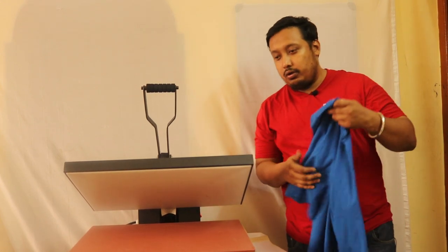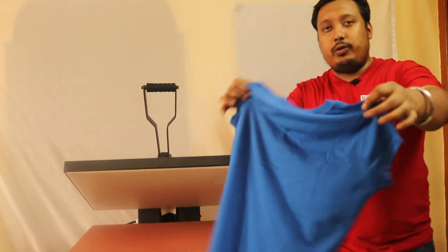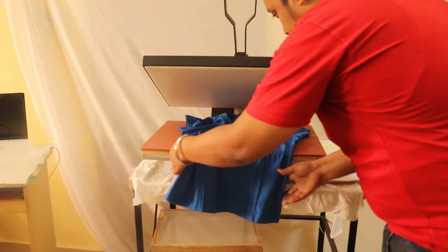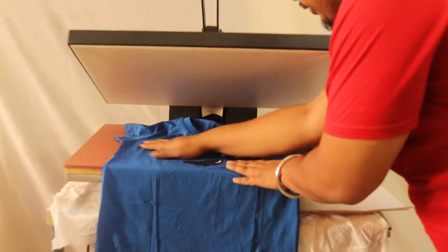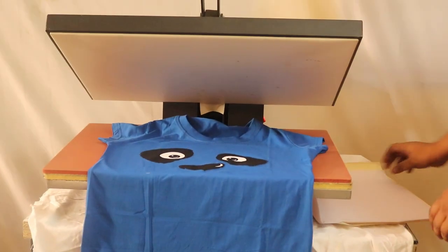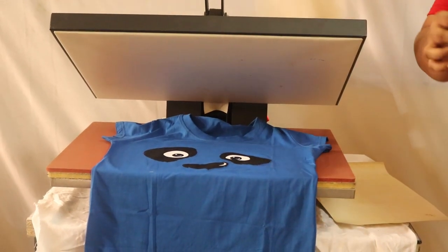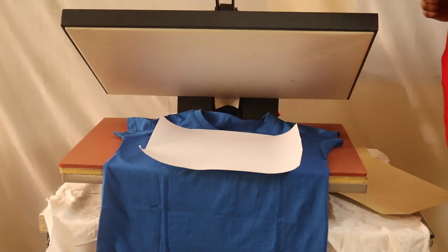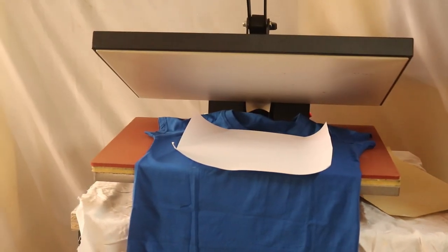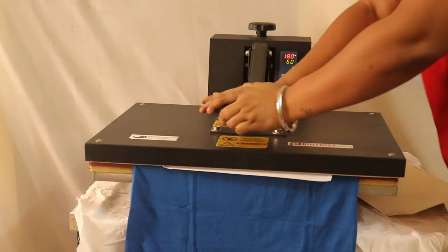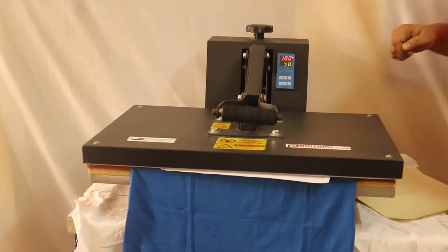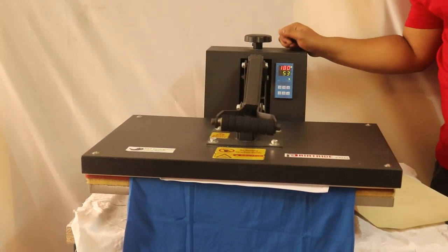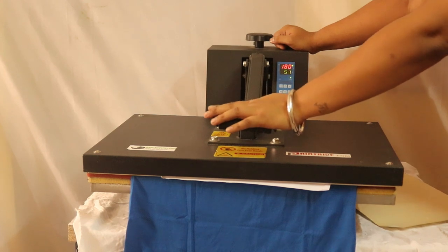First of all, we will put the blue t-shirt. After putting the blue t-shirt, we will take our matte finish paper and put it over the blue t-shirt. And press it in a medium pressure. For final curing and for texture, 10 seconds is enough.